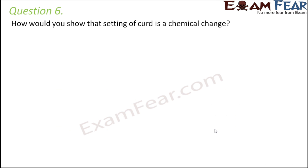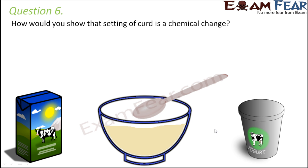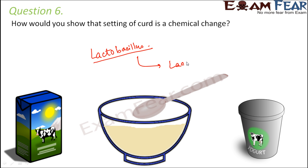Question number 6: how would you show that setting of curd is a chemical change? During curd formation, you take milk, add a small amount of curd as a starter, and leave it overnight. Due to the action of bacteria called lactobacillus present in curd, lactic acid is produced. Since acids are sour in taste, the curd gets a sour taste. New chemical substances like lactic acid are formed, so this is a chemical change.